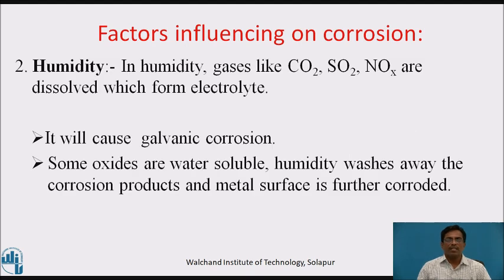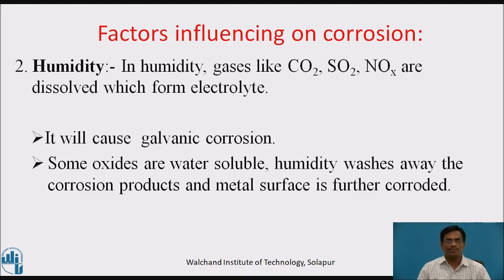Second, humidity — gases like carbon dioxide, oxides of sulfur, and oxides of nitrogen dissolve in humidity, which forms an electrolyte and causes galvanic corrosion. Some oxides are water-soluble, and humidity washes away the corrosion products, so the metal surface further gets corroded.